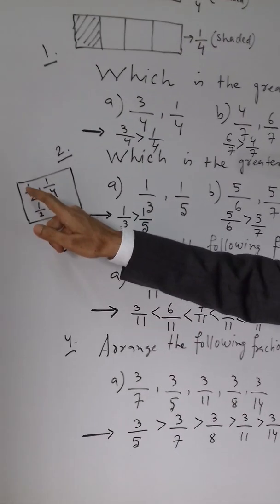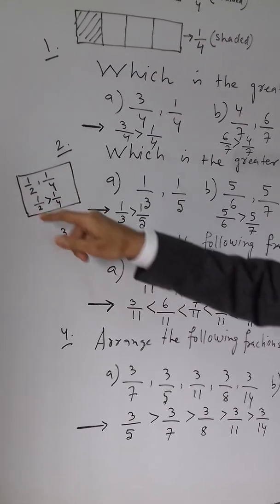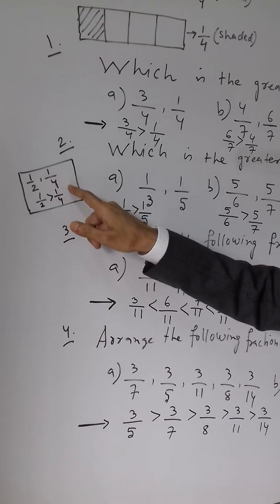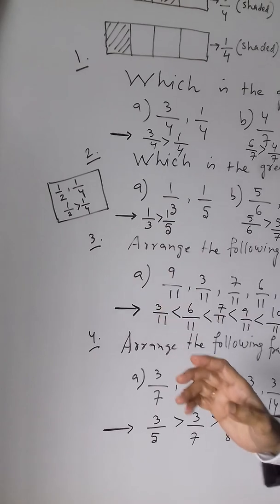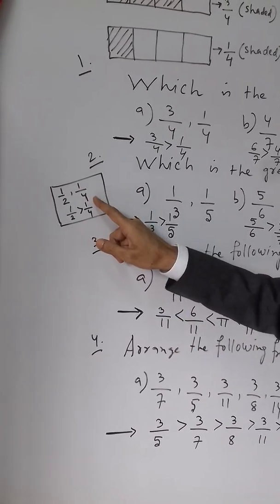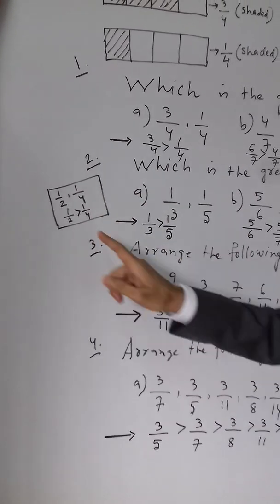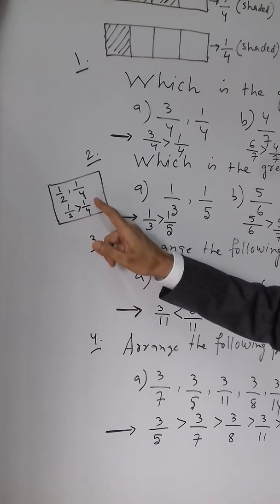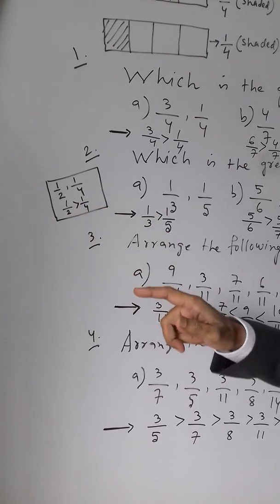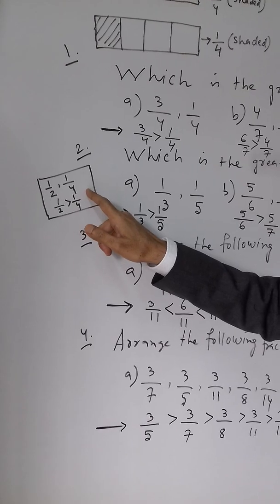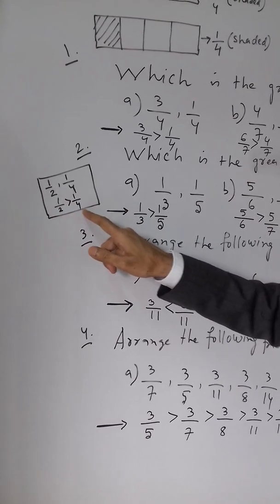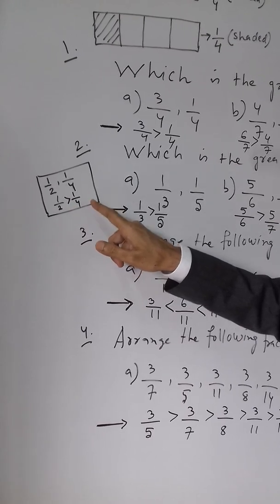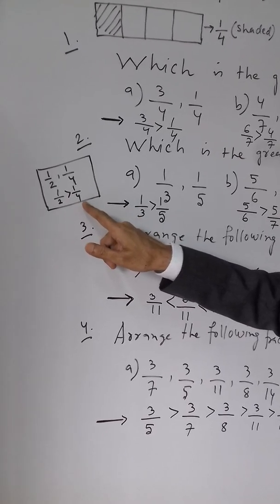Just a simple thing: 1 by 2 and 1 by 4 — which one is greater? Half is greater than 1 by 4. Half means 50 paisa, 1 by 4 means 25 paisa, so half is greater than 1 by 4. The numerators are the same but the denominators are different, so you must compare the denominators.